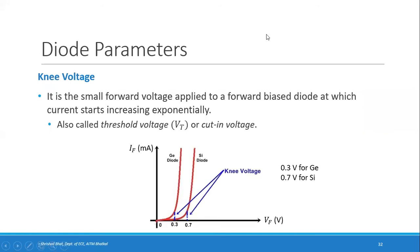The first parameter is the knee voltage. From the characteristic graph, it is the small forward voltage applied to a forward biased diode at which the current starts increasing exponentially. For germanium it is 0.3 volts — at that voltage the current starts increasing. For silicon diode it is 0.7 volts, at which point it starts increasing exponentially.